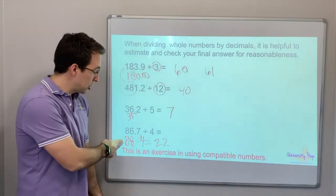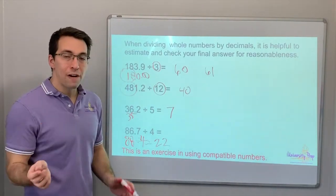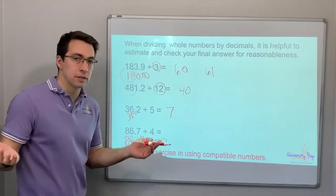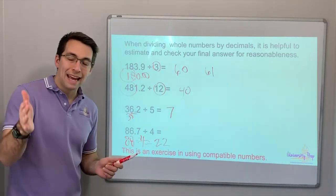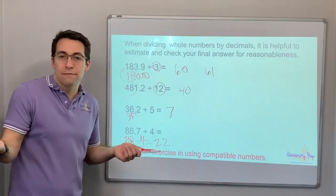See? We just rounded. We're finding which numbers are compatible. 4 and 8 are always compatible. So, 88 divided by 4 is 22. That's it.